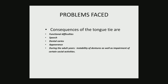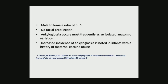Next is aesthetics. Aesthetics plays a very important role, so when there is tongue tie it will not be aesthetically pleasing. Additionally, during adult age it becomes very difficult to place dentures, RPDs, or other prostheses, because the frenum will be a hindrance for all these procedures.